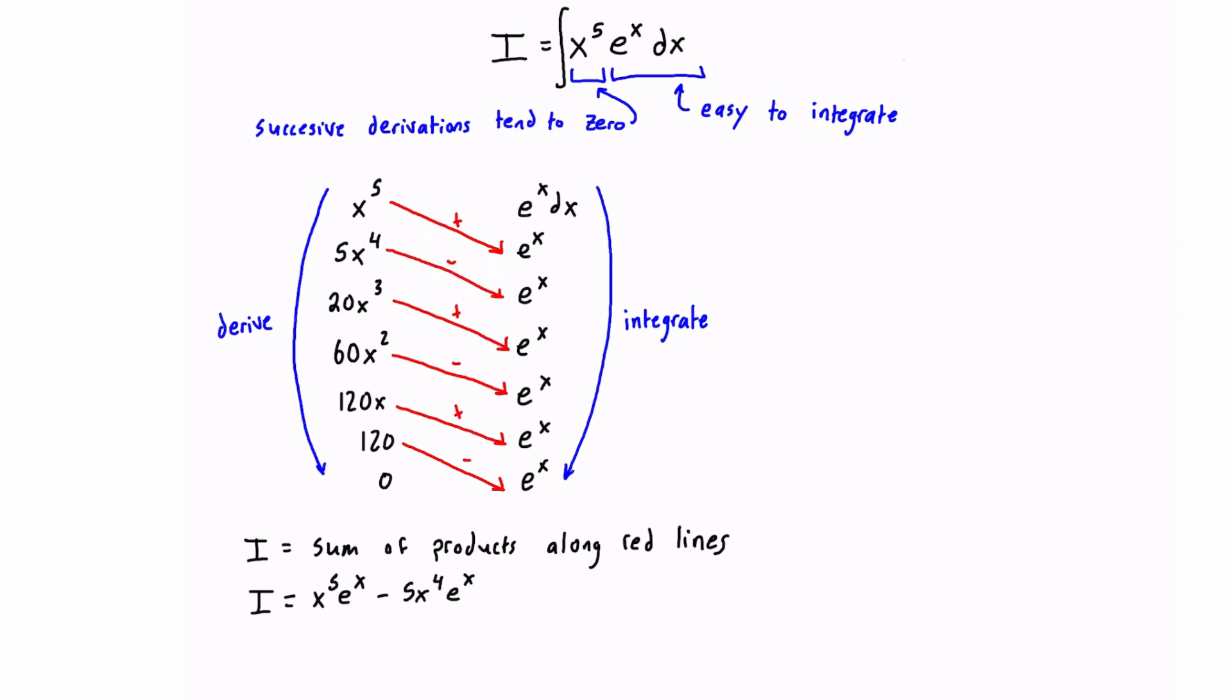The next sign is negative, so minus 60x squared times e to the x. The next one is positive, so plus 120x times e to the x.